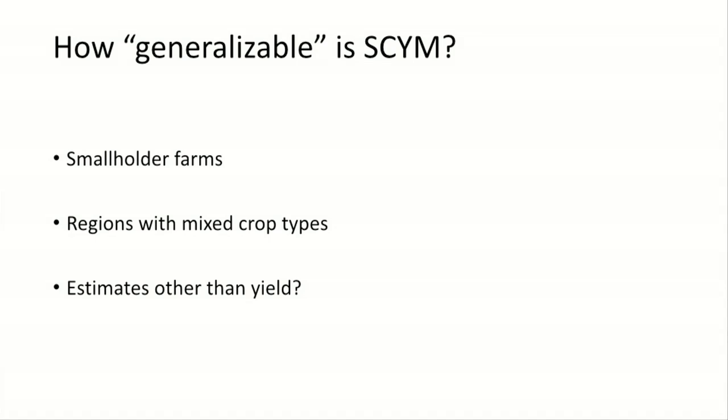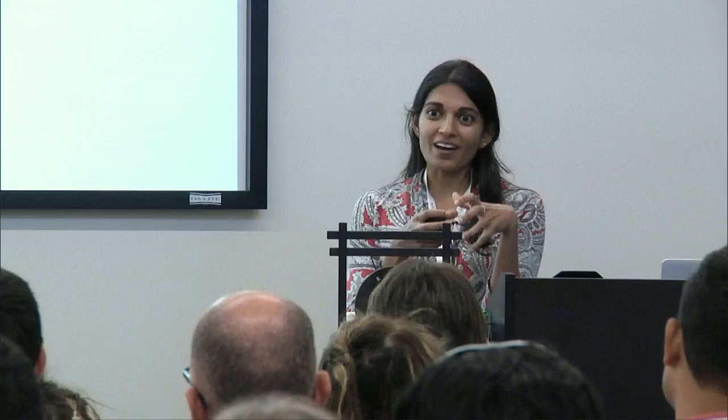Now we're working on figuring out how generalizable the SCYM algorithm is. We did a pretty good job mapping rain-fed maize in the US Corn Belt. But how well does this work in other systems? The motivation was that we really wanted to use remote sensing to map yields in areas where we might not necessarily have great ground data. These regions often overlap with areas that are primarily smallholders — farm sizes typically two hectares or smaller. With smallholder farms, fields are typically finer than the resolution of a Landsat pixel, which leads to problems of mixed pixels that could reduce our accuracy. The second issue is some regions also have a lot of mixed crop types, where unlike the Corn Belt in the US, you might have different crops being planted next to one another.